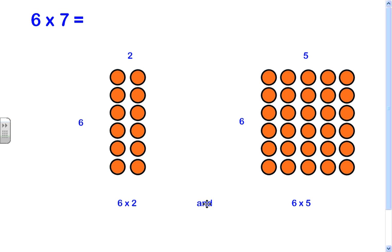So we're using the word and. And means both, right? We had this 6 by 2 array and the 6 by 5 array, which are just the original array split up into two smaller arrays.